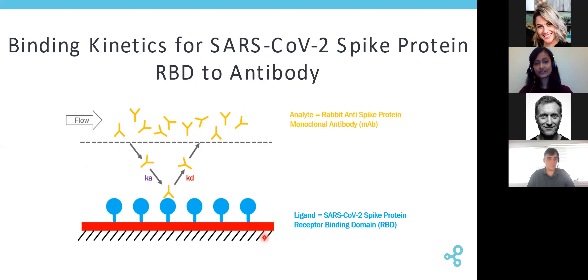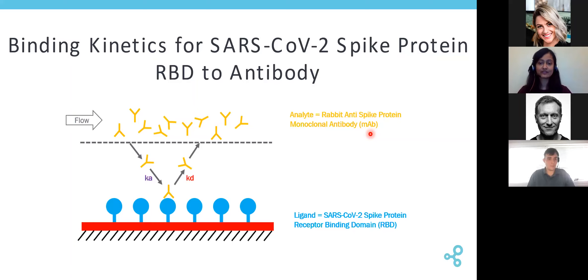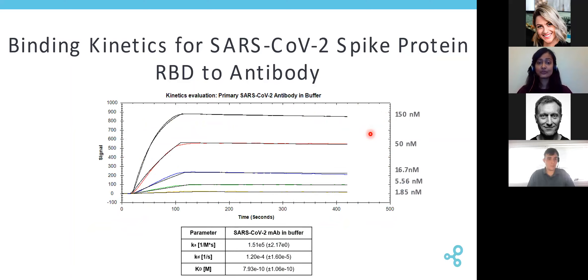Our team worked with a system where our ligand was the coronavirus spike protein receptor binding domain, immobilized on our carboxyl sensor. As a proof of concept, we introduced a monoclonal antibody from rabbit in running buffer to test if we could specifically detect the signal for our monoclonal antibody with respect to our ligand. We show that with five analyte concentrations going from 150 nanomolar all the way down to 1.85 nanomolar at a dilution factor of about three, we are able to detect highly specific and very strong binding signals for our monoclonal antibody against the spike protein receptor binding domain. We observed that our KD is in the low nanomolar range, indicating a very, very strong binding system.